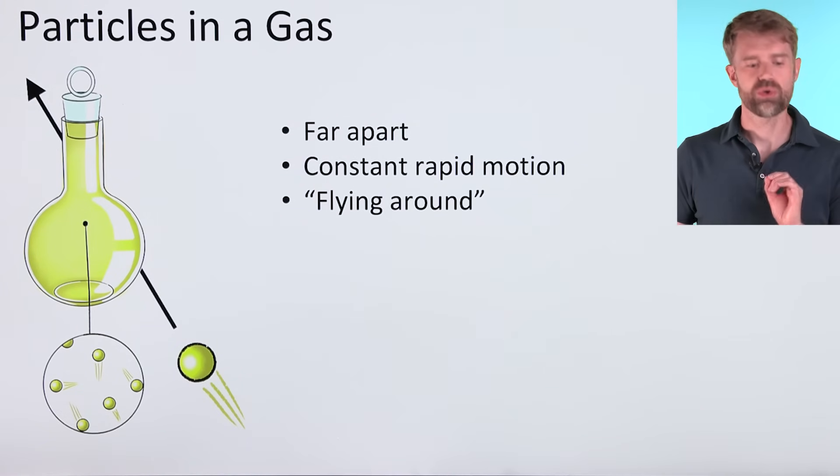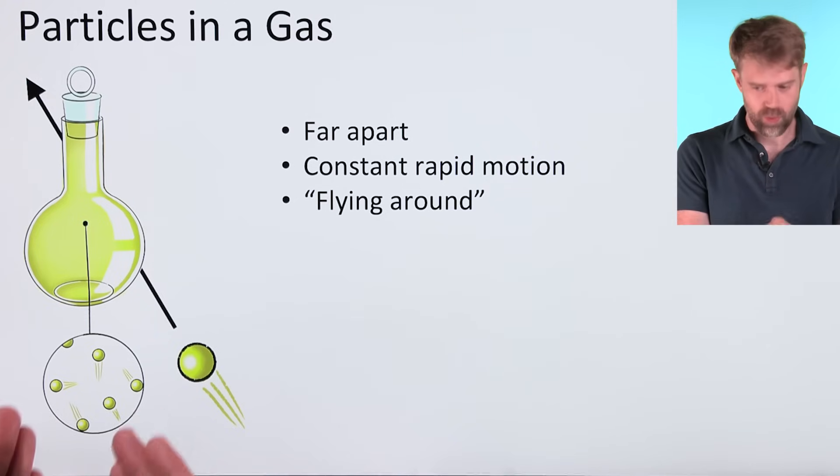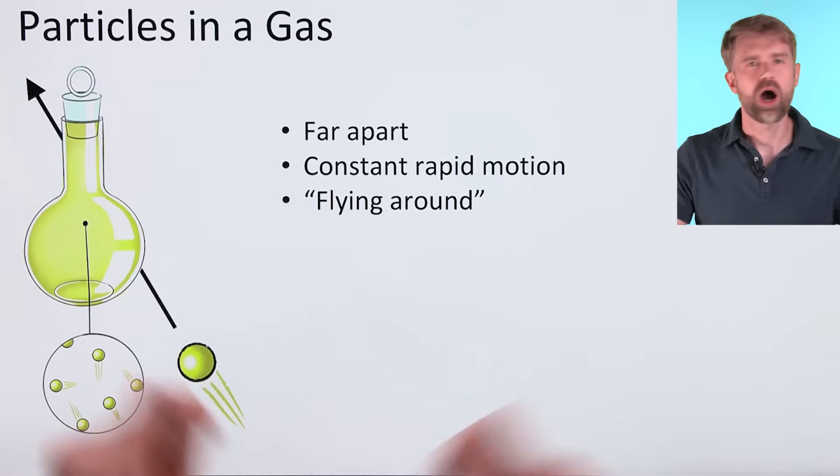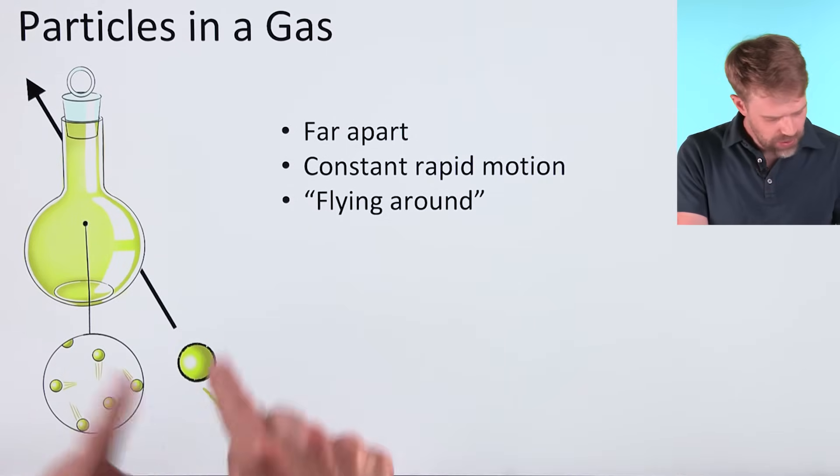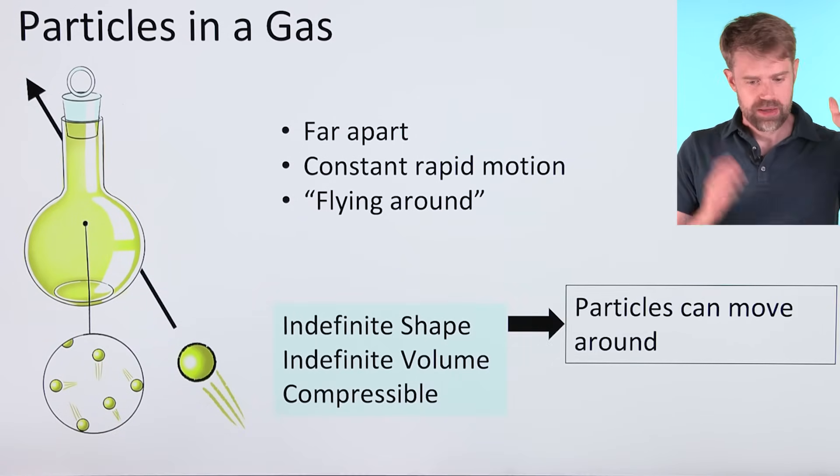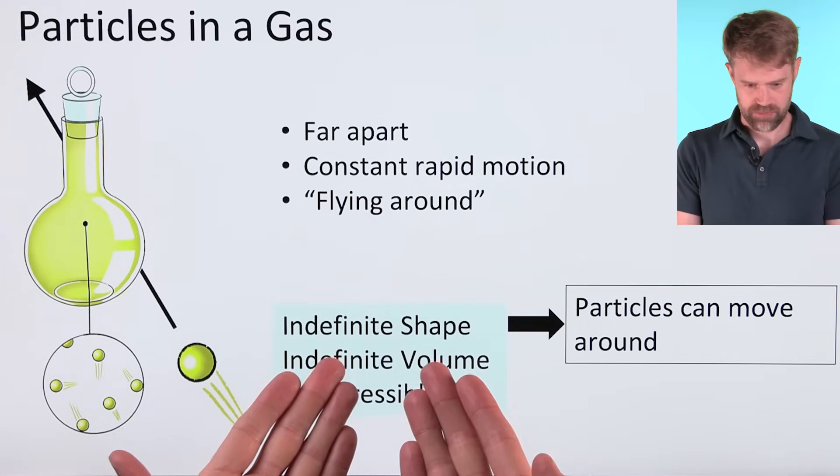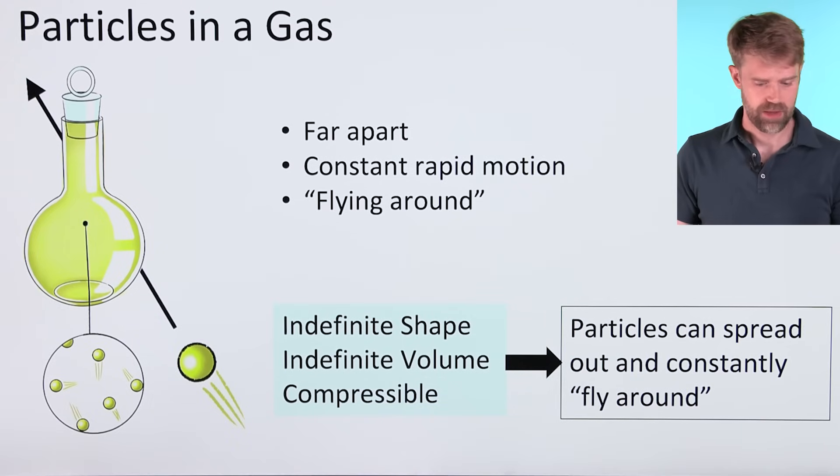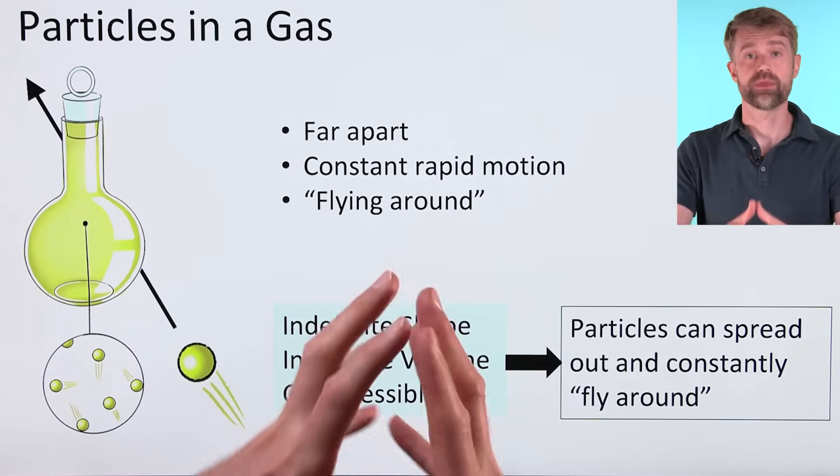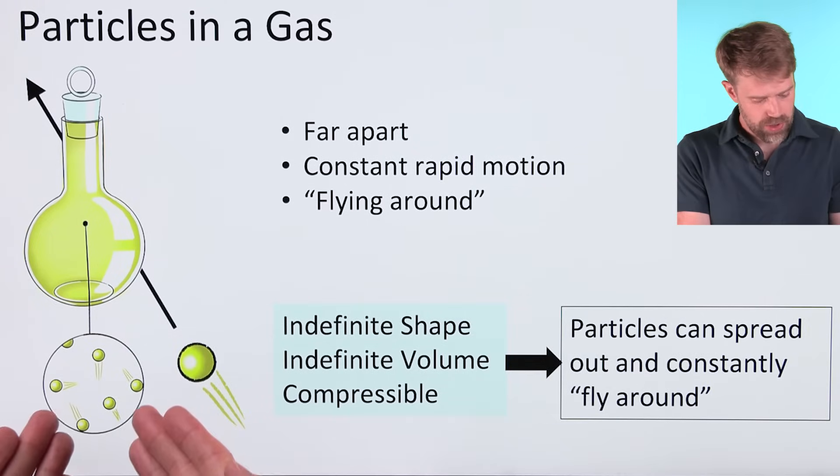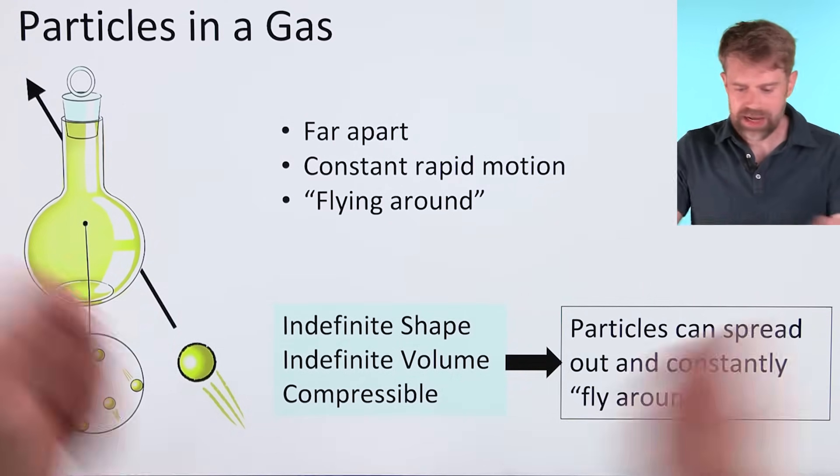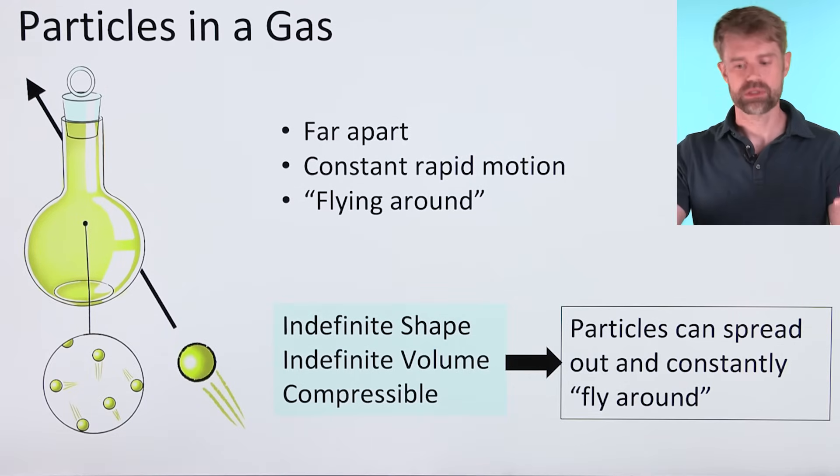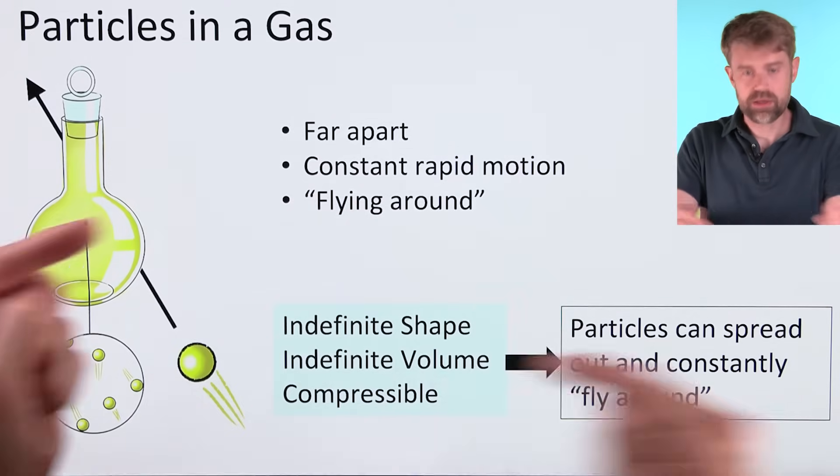Let's zoom in on our gas. Check it out. The particles are really far away from each other. We'd see that they are in constant, rapid motion. They're flying around really fast. Gases have an indefinite shape, just like liquids. Because the particles can move around into new locations. They also have an indefinite volume. They can expand and contract. That's because these particles are far apart and they're constantly flying around. When they have more space to take up, the particles just fly further apart. Or, give them less space and they can come in closer.